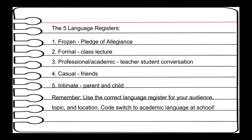The five language registers: Number one, frozen — Pledge of Allegiance. Number two, formal — class lecture. Number three, professional academic — teacher-student conversation. Four, casual — friends. Five, intimate — parent and child. Remember, use the correct language register for your audience, topic, and location. Code switch to academic language at school.